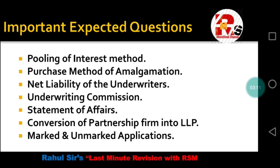The Pooling of Interest Method is also amalgamation-related and is based on the merger basis. After that is the Purchase Method of Amalgamation — the entries we pass are under this method, so it can also be a question. Next is Net Liability of the Underwriters, related to underwriting of shares and debentures. Then Underwriting Commission — study what percentage is fixed for equity shares and debentures. Also prepare Statement of Affairs.